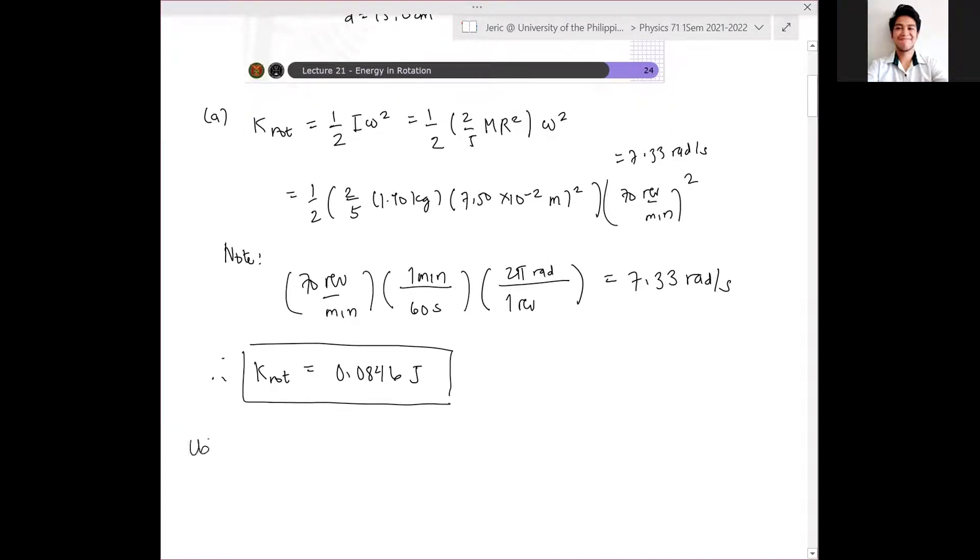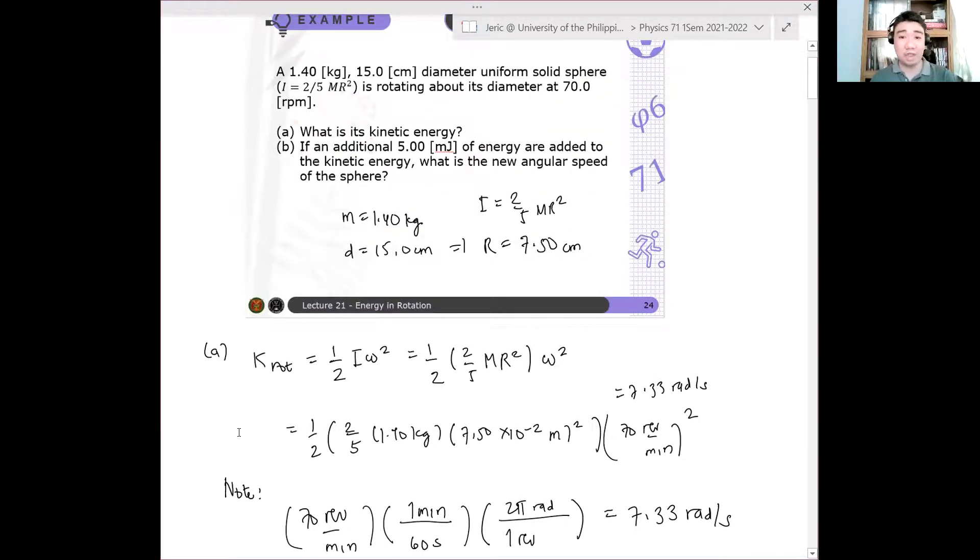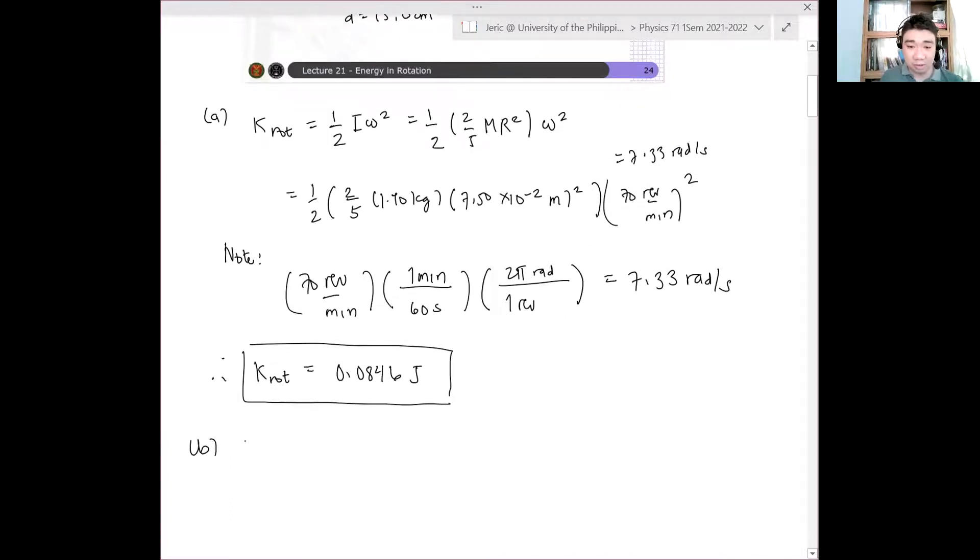Okay, so letter B. Now we want to determine—you added energy to the rotating body. Therefore, it should speed up. If it slowed down, you'd be surprised your answer is wrong. What is the new angular speed? So that final angular speed should be higher than the angular speed we have right now. For letter B, we will use work kinetic energy theorem.